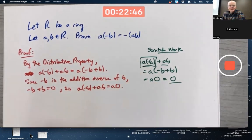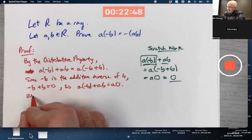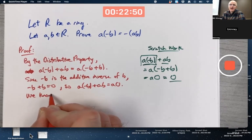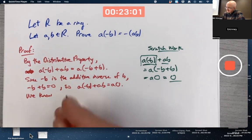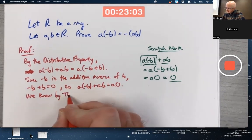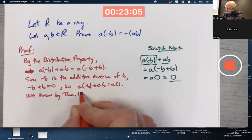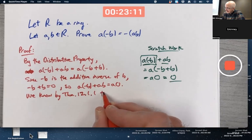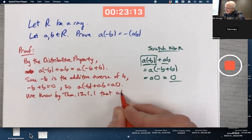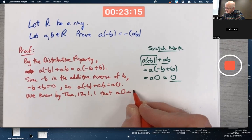So we know by a previous property that's been proved, you could quote what theorem it is in the book. I think it's theorem 12.1 part one or something. By theorem 12.1 part one, that A times the additive identity is the additive identity.